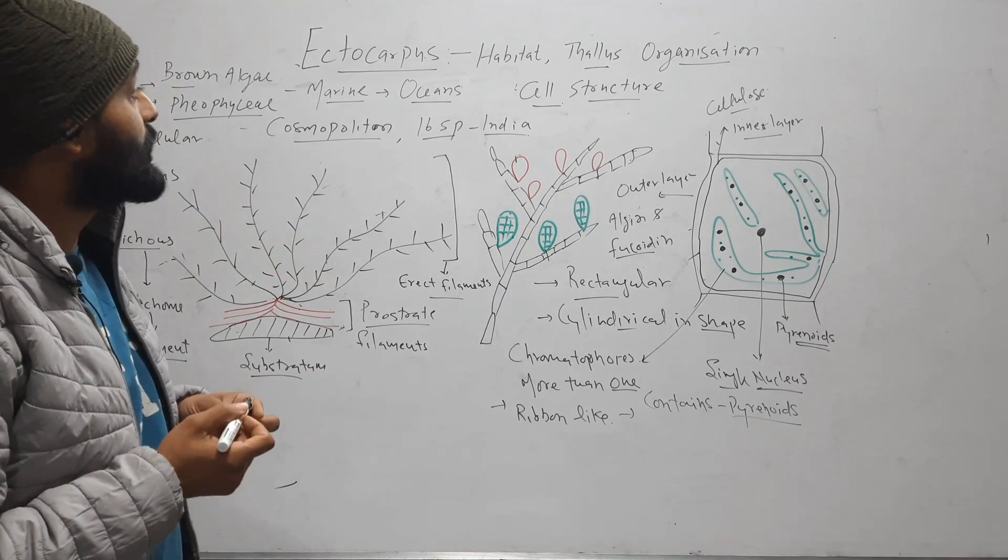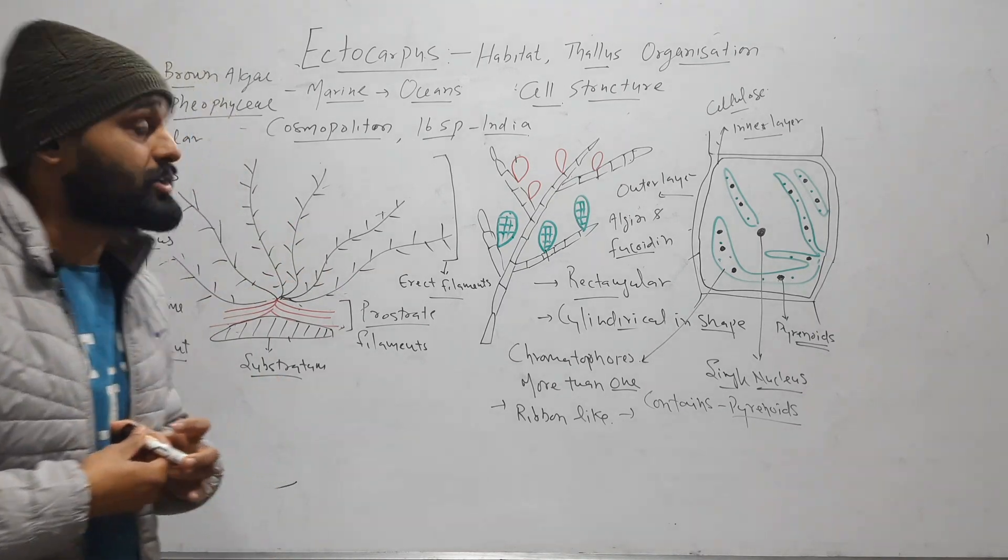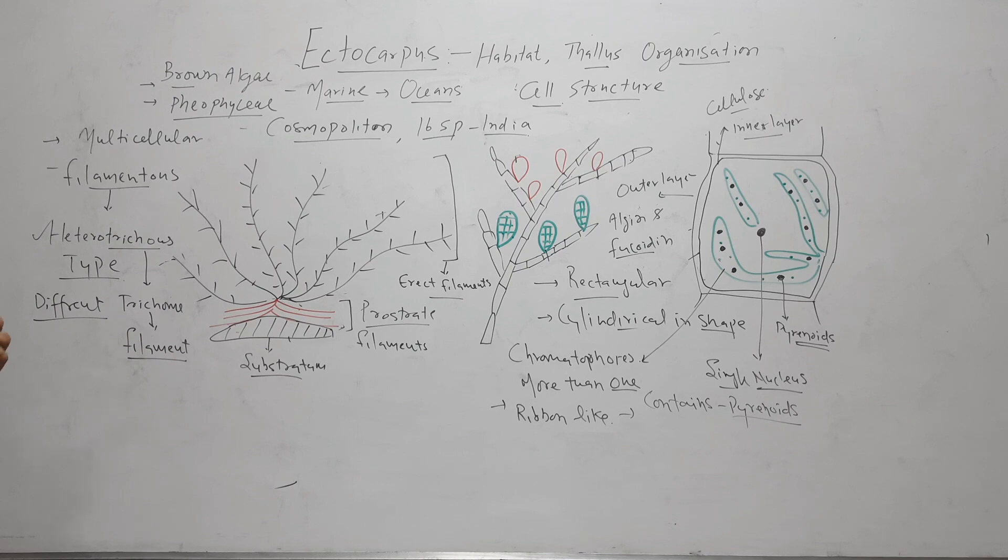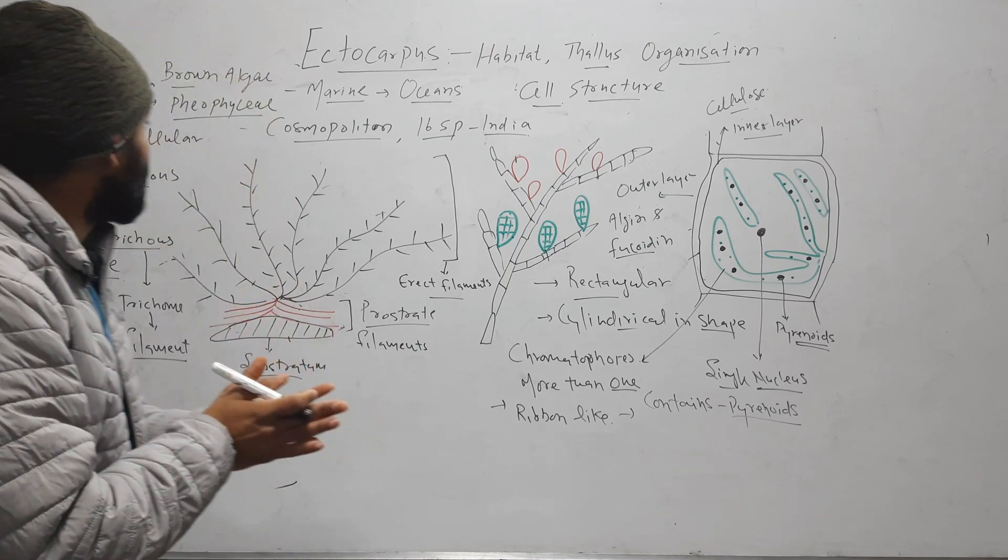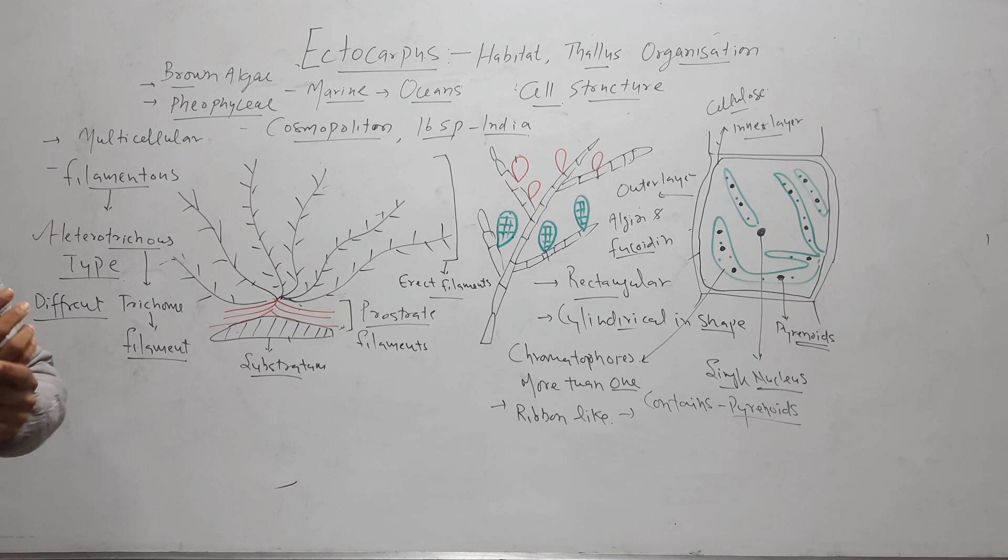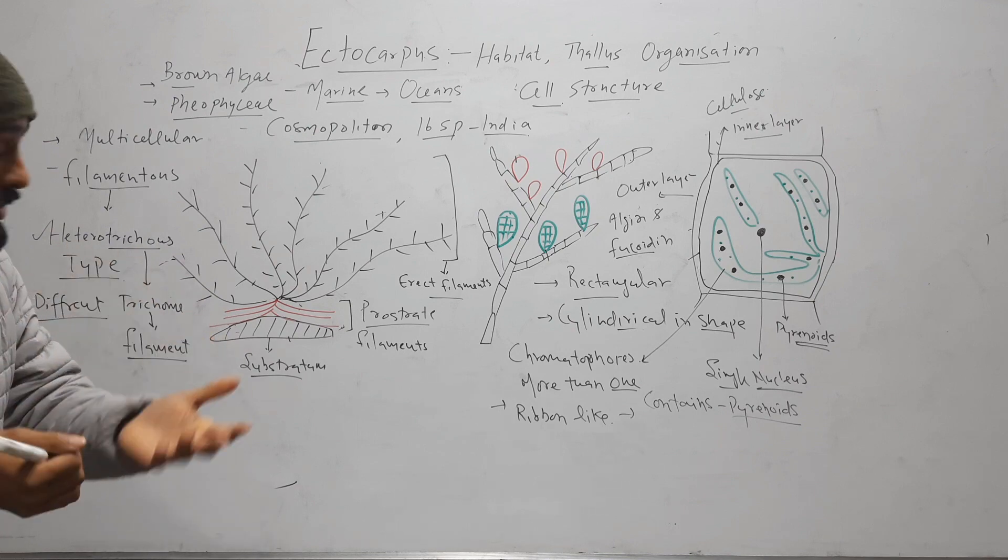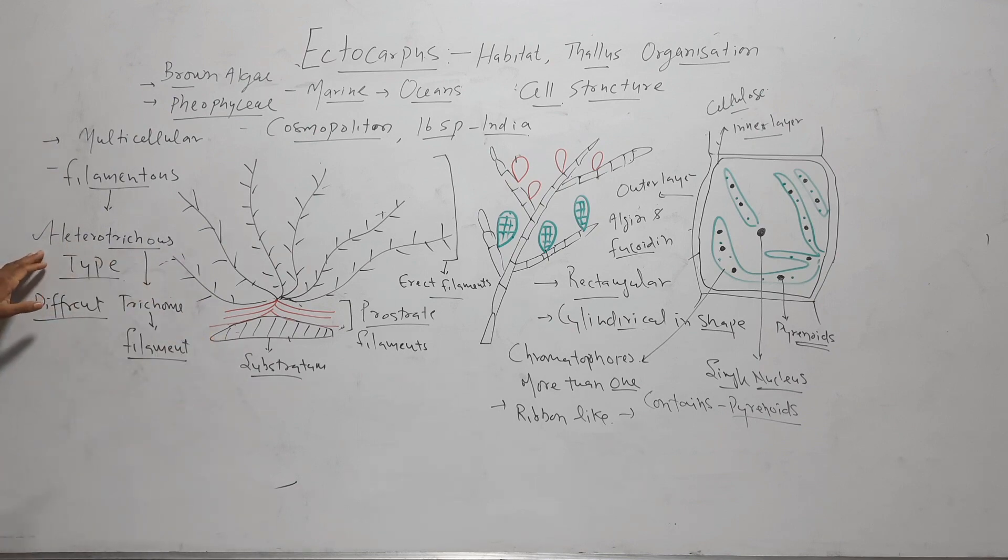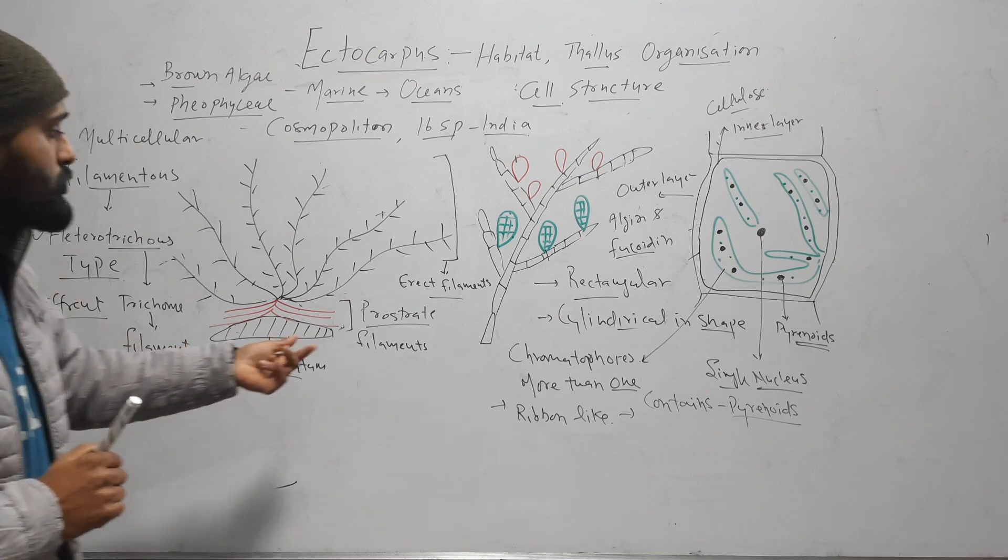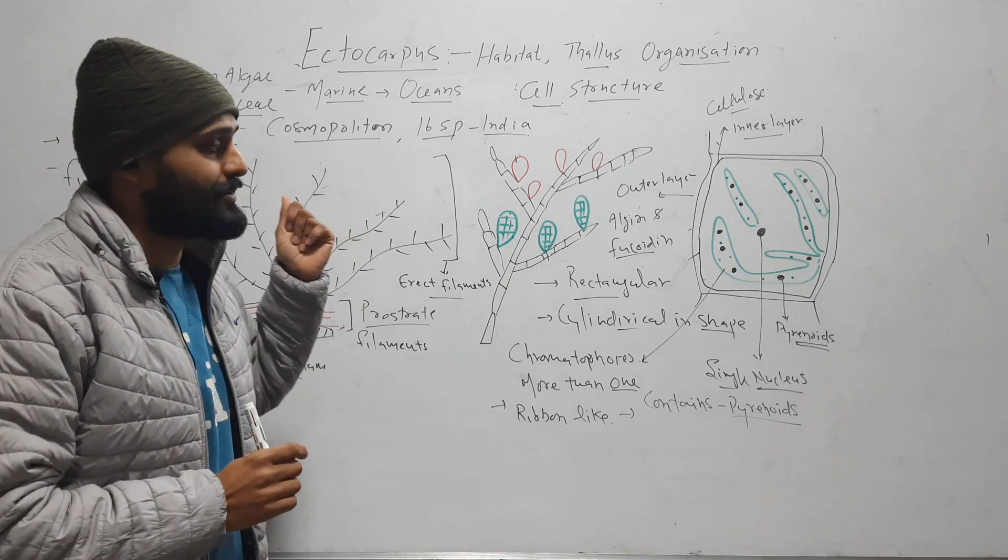So this is habitat, thallus organization, and cell structure of Ectocarpus. Ectocarpus is marine and it is found everywhere, in every corner of the globe. And its thallus is heterotrichous. It has two types of thallus: prostrate and erect thallus.